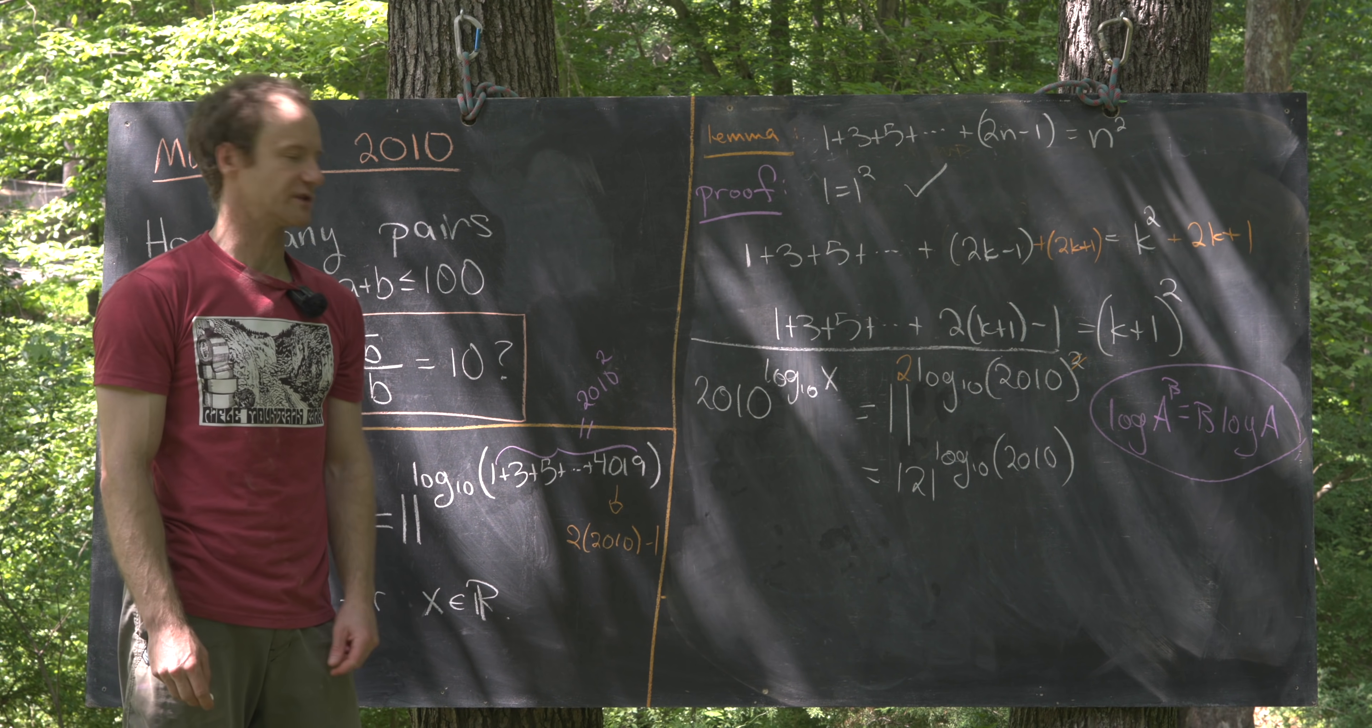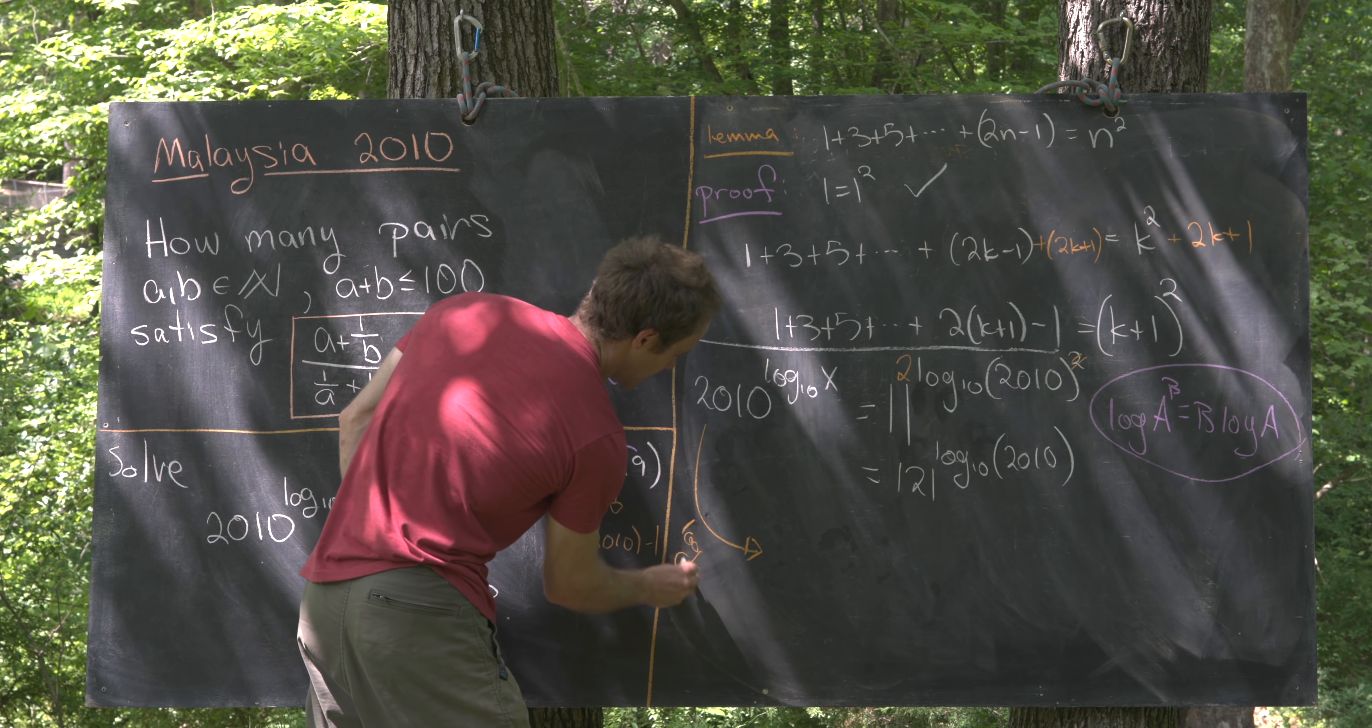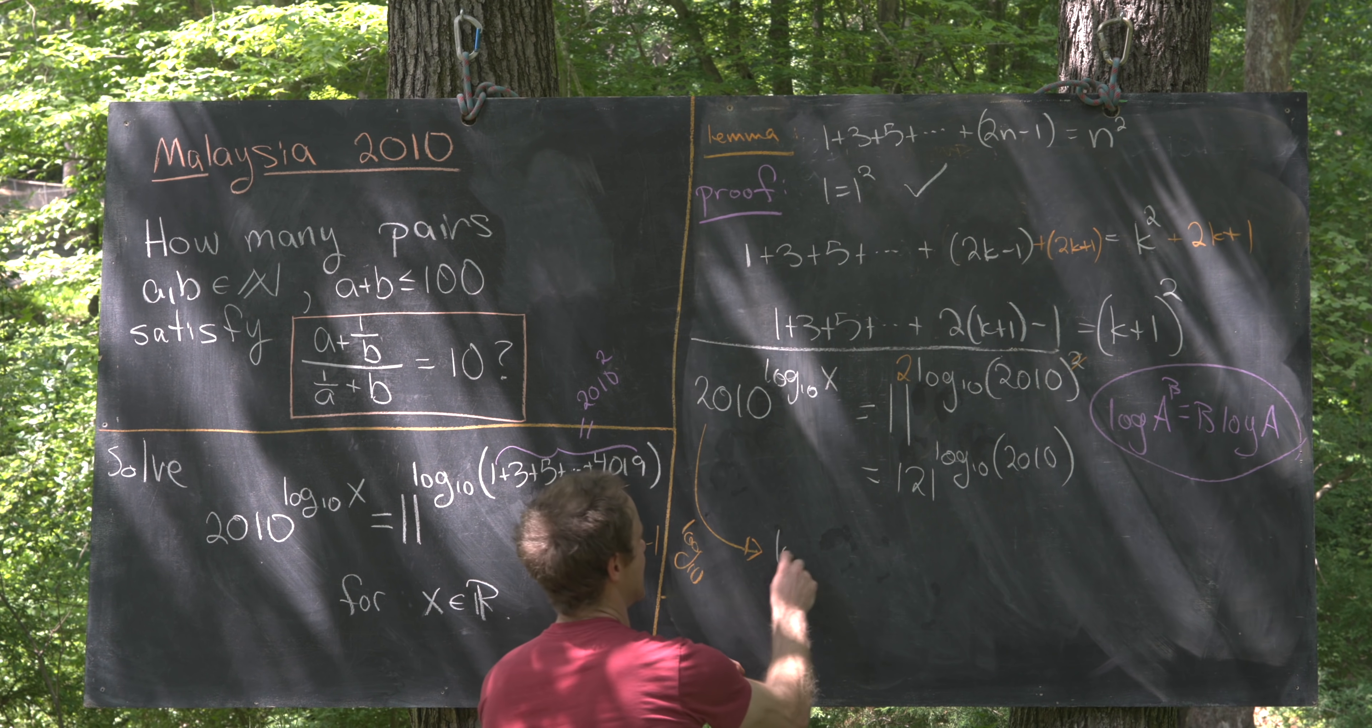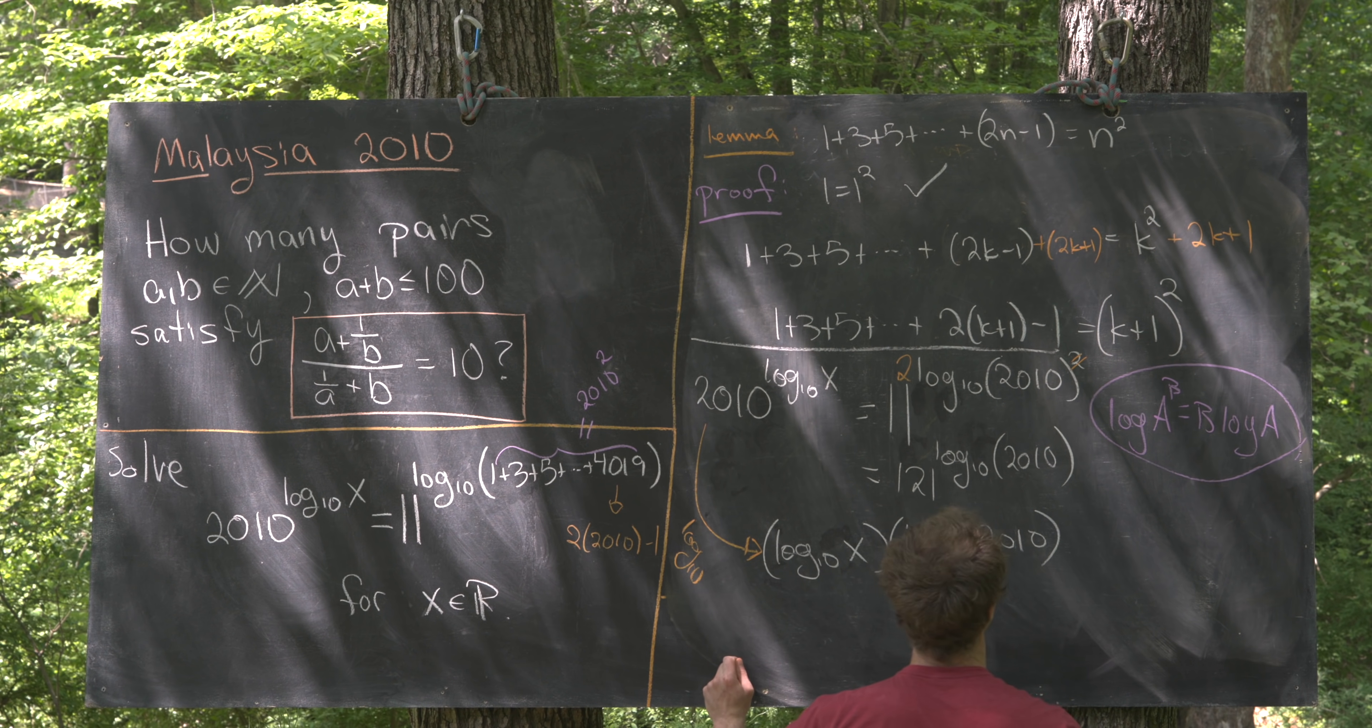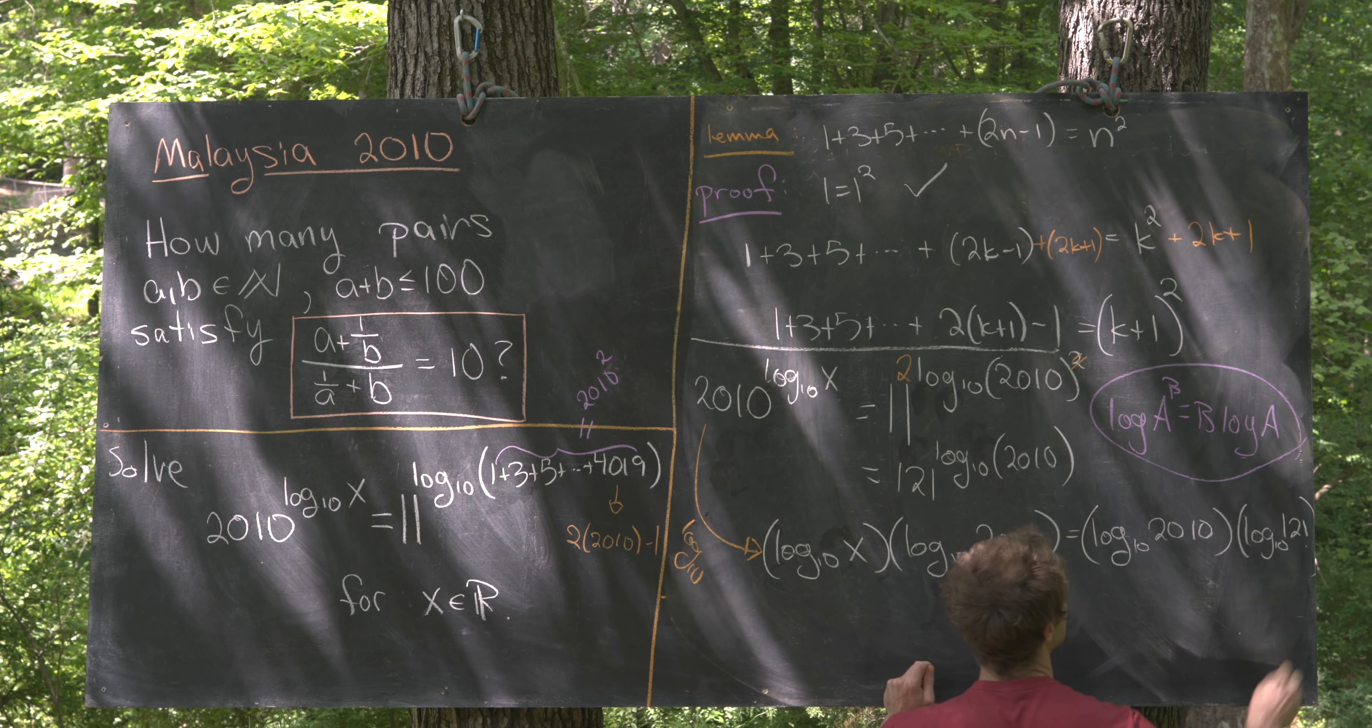So that gives us a much more manageable equation. Now we can go from here by taking a logarithm with any base. But I think it's easiest if we take a log base 10 of both sides of this equation. So again, using that logarithm rule, we'll be left with on the left hand side log base 10 of x times log base 10 of 2010. Then on the right hand side, we'll be left with log base 10 of 2010 times log base 10 of 121.